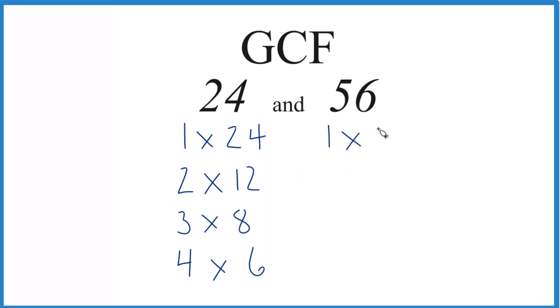1 times 56, that's 56. 2 times 28, that would equal 56. 4 times 14, that's 56. And then 7 times 8, that's the one we're probably familiar with. 7 times 8 is 56. So we have these factors here.